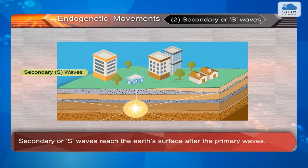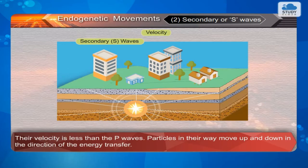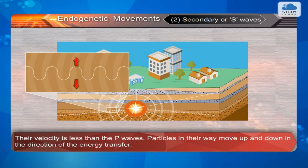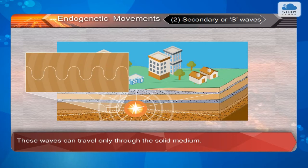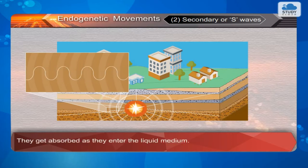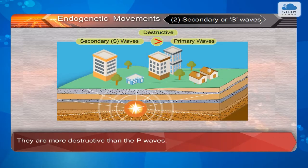Secondary or S waves reach the earth's surface after the primary waves. They also scatter in all directions from the focus of the earthquake. Their velocity is less than the P waves. Particles in their way move up and down in the direction of energy transfer. These waves can travel only through the solid medium — they get absorbed as they enter the liquid medium. Buildings on the earth's surface move up and down because of these waves. They are more destructive than the P waves.